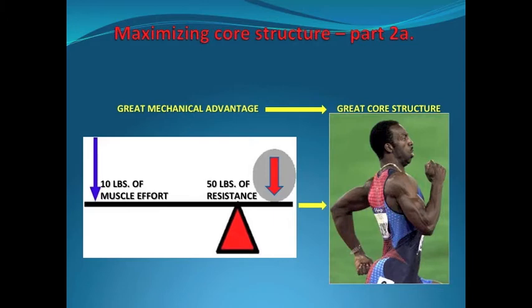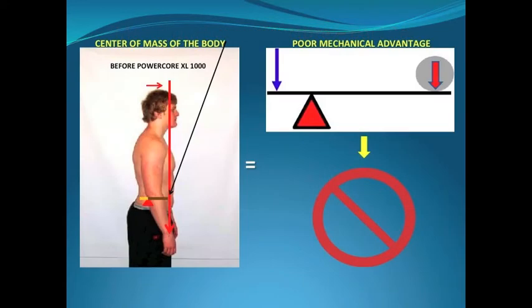Back to Michael Johnson again — great mechanical advantage equals great core structure. Here is an athlete we worked with on our orthopedic strength training equipment, the PowerCore XL1000. As you can see, he did not have great core structure when he started with us. His center of mass is forward, or anterior of where it needed to be. This caused a greater distance from the center of his L2-L3 disc to the point of his center of mass versus the distance from the L2-L3 disc to the intraspinalis — in other words, his lever arm was at mechanical disadvantage. His body was working harder just to hold himself upright than it needed to.